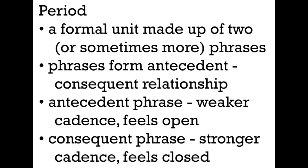A period is a formal unit made up of two or sometimes more phrases. Most commonly periods are two phrases, but there are some that are a little bit larger. Those phrases form a particular relationship that we call antecedent and consequent. The first phrase is the antecedent phrase, and what makes it the antecedent is that it has a weaker cadence and a feeling of openness — it needs to be resolved, it needs to be answered, it leaves us hanging. The consequent phrase has a stronger cadence and feels closed. That's what we mean by a period: a weak cadence followed by a strong cadence.